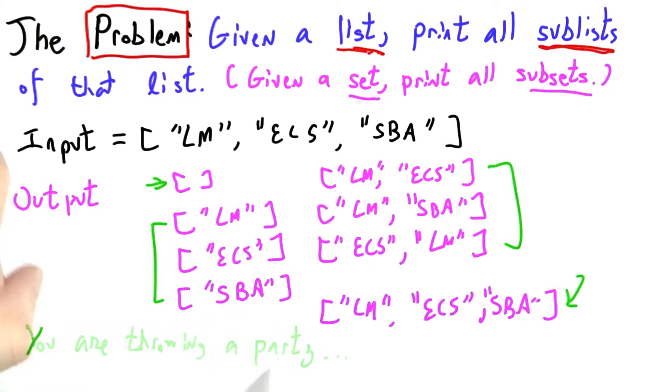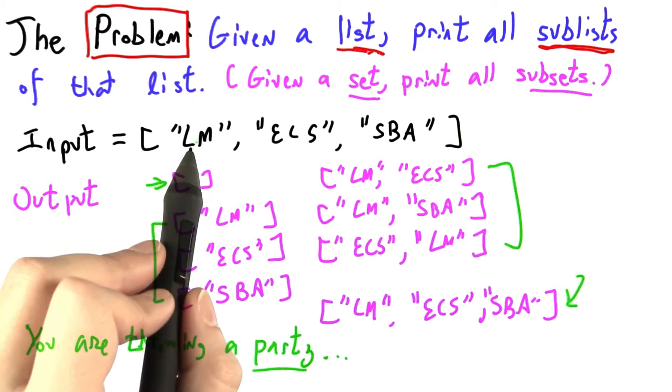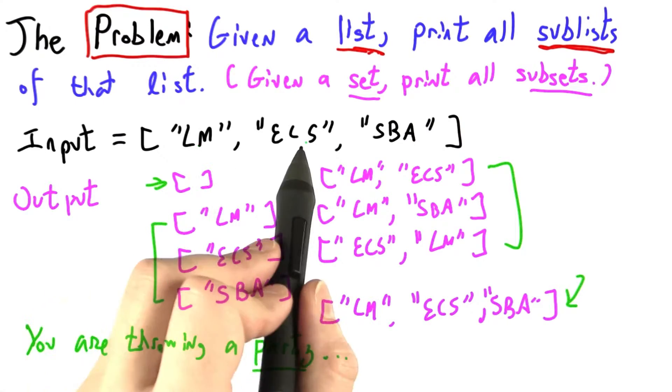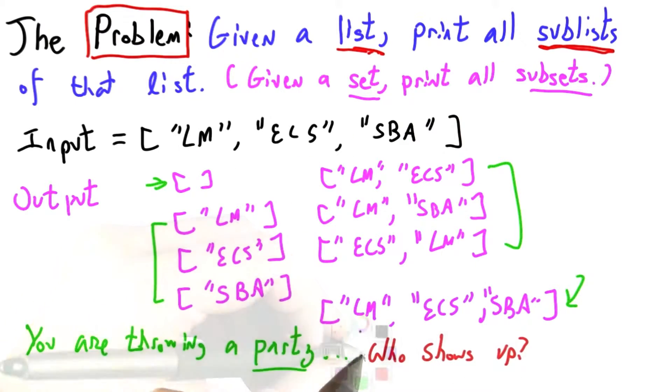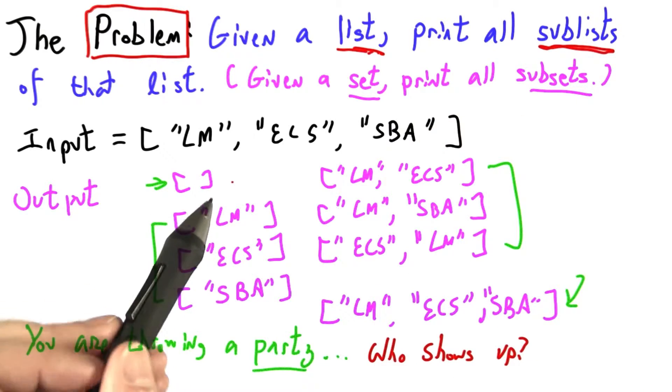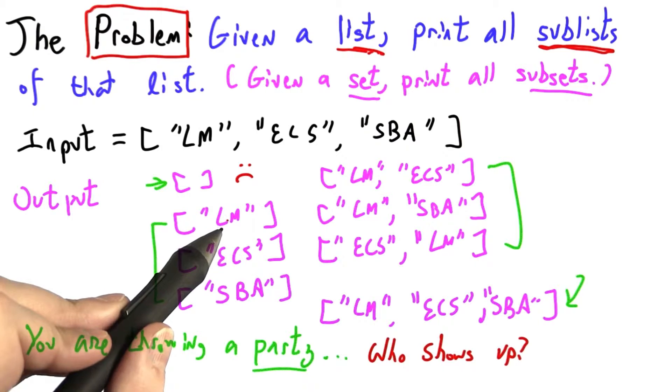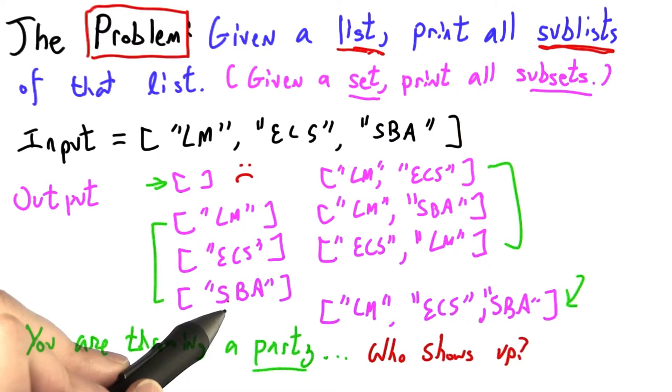And one way to think about this is that you are throwing a party, or perhaps hosting a dinner, and you've invited your three friends: LM, ECS, and SBA. Who could show up? Well, one possibility is that no one shows up and you eat alone. That would be super sad. Another possibility is that only your first friend shows up, or only the second, or only the third.